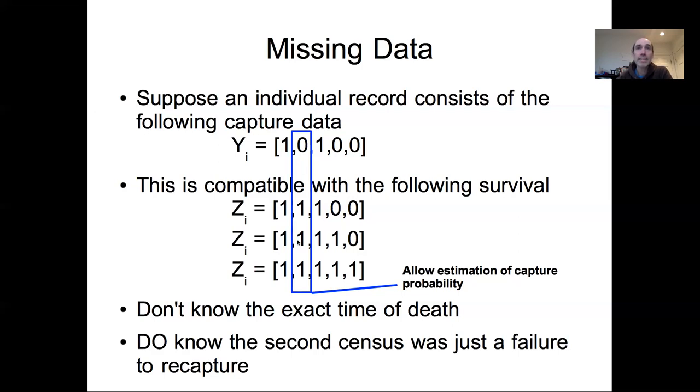And then with some estimate of the capture probability, it helps us infer what the likelihood of mortality is in these times where we don't recapture individuals. So let's look at what that would mean in terms of flushing out both the process model and the data model.